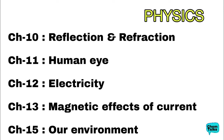Moving to the next theme — in physics, Natural Phenomena and Effect of Current, there are a total of 4 chapters to cover: Reflection and Refraction, Human Eye, Electricity, and Magnetic Effect of Current. That is chapters 10, 11, 12, and 13 for physics. And the last chapter mentioned under the Natural Resources unit is Our Environment, which has a weightage of 5 marks. This is Chapter 15, and it is included in the syllabus.